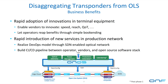Phase 1.0 of the ODTN project looks at disaggregating the transponders from the open line system in order to achieve rapid innovation of technology in terminal equipment and a better life cycle that does not involve changing the whole span of the optical point-to-point connection in order to introduce new technologies, services and innovations.